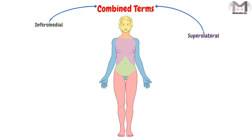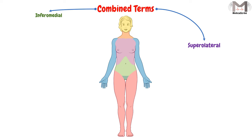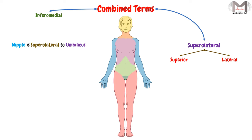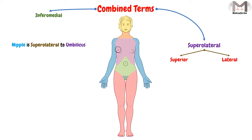The superlateral, on the other side, means that a structure will move towards the head because of superior, and away from the midline of the body because of lateral. For example, if we say the nipple is superlateral to the umbilicus, that means the nipple is above the umbilicus — towards the head because of superior — and away from the midline of the body because of lateral, in comparison with the umbilicus.